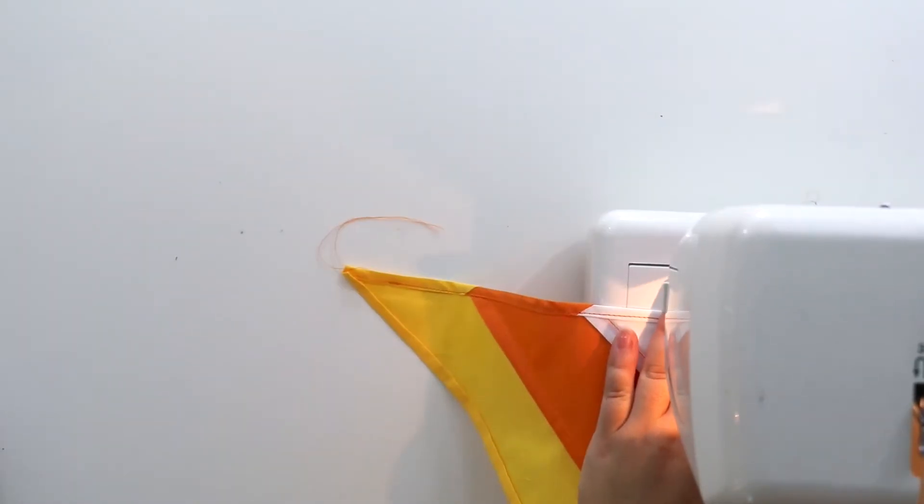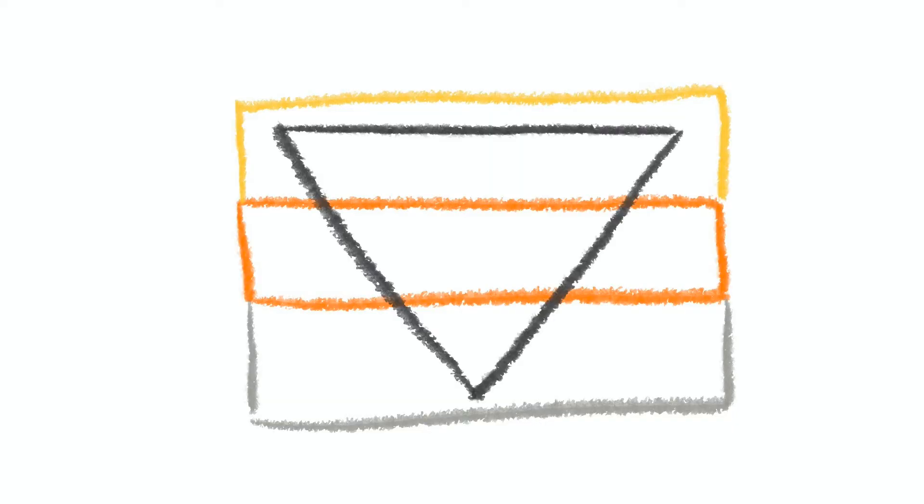If I were to do this again, I would actually just sew three rectangular strips together with french seams that were a bit larger than my pattern piece, then cut out the triangle shape and proceed with sewing the bandana together as usual.